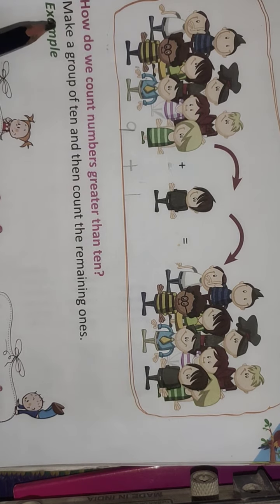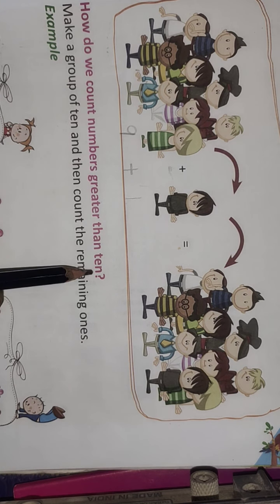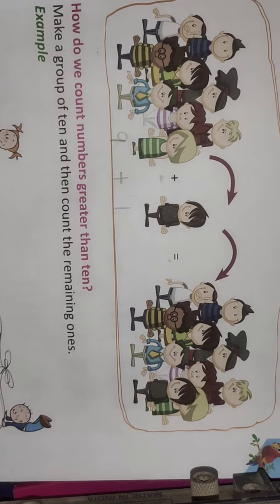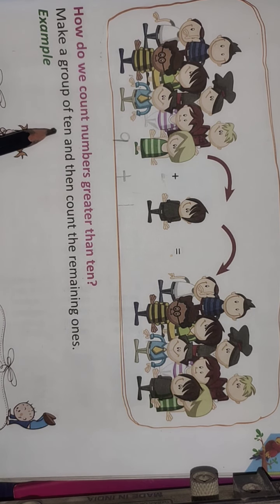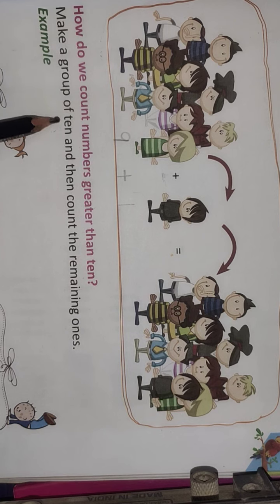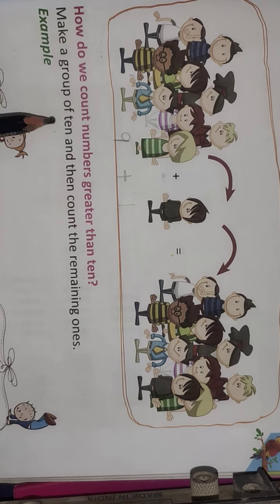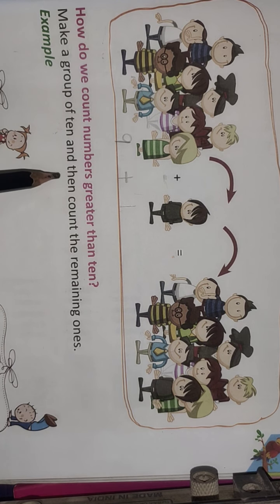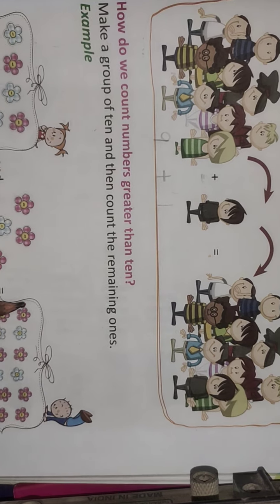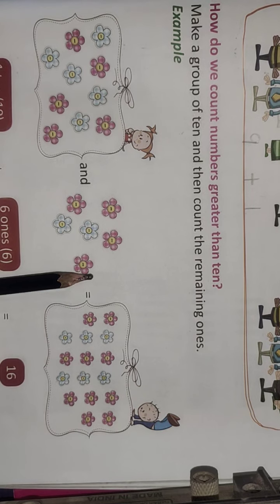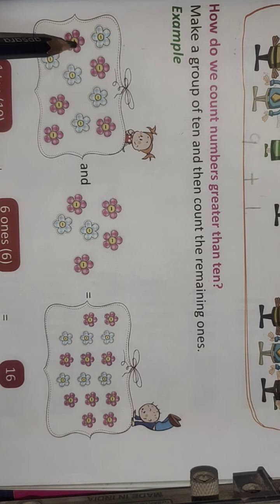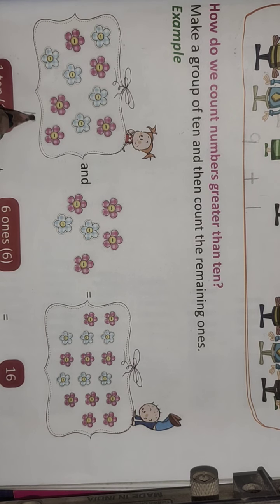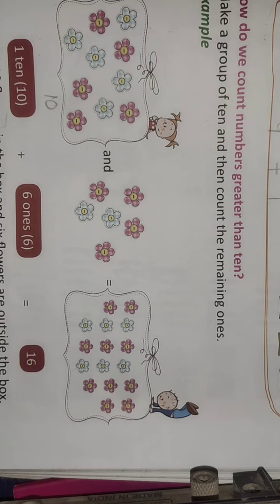How do we count numbers greater than 10? Make a group of 10 and then count the remaining ones. A group means 10 objects are there. See here — some flowers are there. Count them: 1, 2, 3, 4, 5, 6, 7, 8, 9, 10. This is a group — 1 ten.